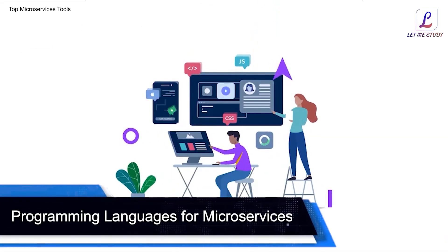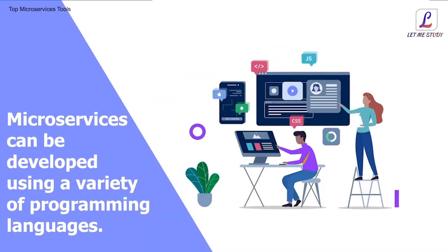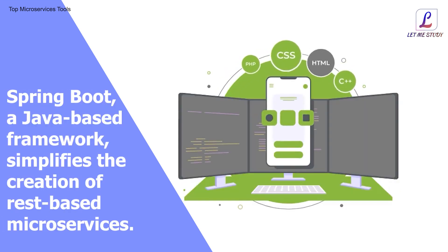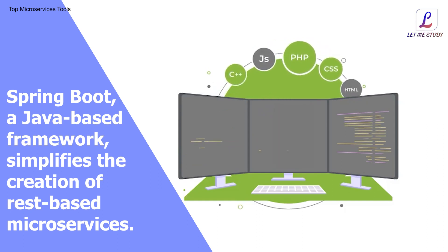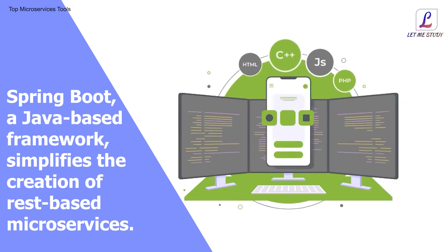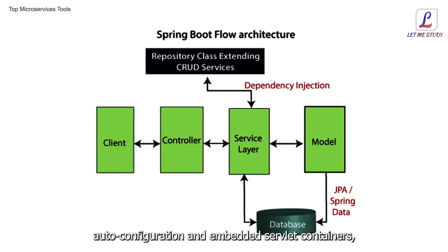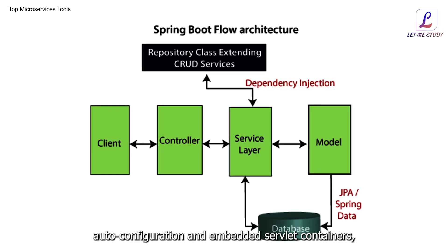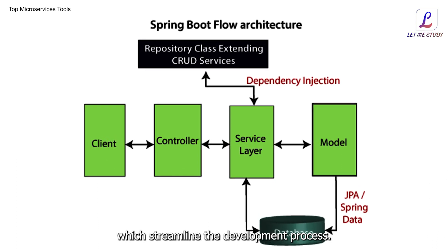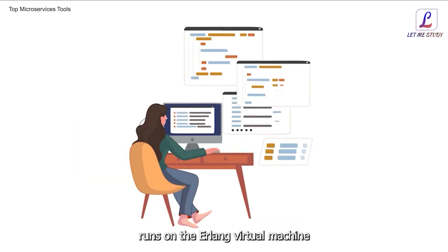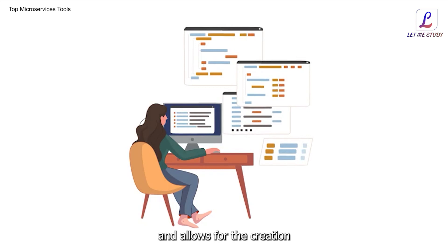Programming languages for microservices: microservices can be developed using a variety of programming languages. Spring Boot, a Java-based framework, simplifies the creation of REST-based microservices. It provides features such as auto-configuration and embedded servlet containers, which streamline the development process. Elixir, on the other hand, runs on the Erlang virtual machine and allows for the creation of fault-tolerant and distributed applications.